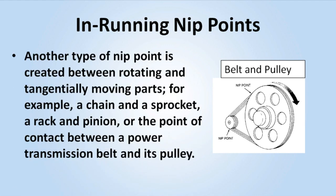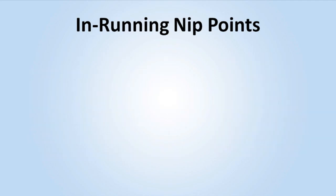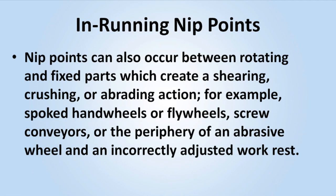Another type of nip point is created between rotating and tangentially moving parts — for example, a chain and a sprocket, a rack and pinion, or the point of contact between a power transmission belt and its pulley. Nip points can also occur between rotating and fixed parts which create a shearing, crushing, or abrading action — for example, spoked hand wheels or flywheels, screw conveyors, or the periphery of an abrasive wheel and an incorrectly adjusted work rest.